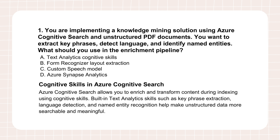Scenario one: imagine you're dealing with loads of unstructured PDF documents — maybe contracts, reports. You're using Azure Cognitive Search, and the goal is to automatically figure out the main topics, detect the language, and pick out names of people or companies — pulling structure from chaos, essentially. Within that Azure Cognitive Search enrichment pipeline, the tool for that kind of text intelligence is the text analytics cognitive skills, right within Azure Cognitive Search.